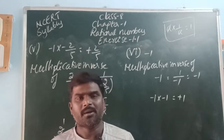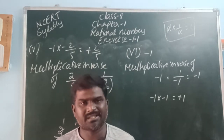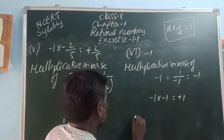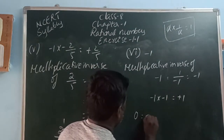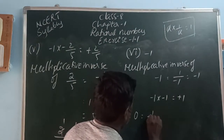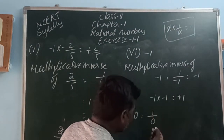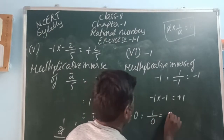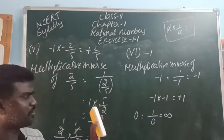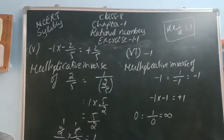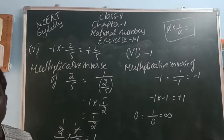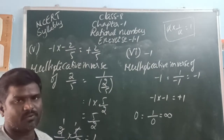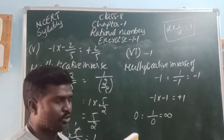Which number does not have a multiplicative inverse? That is 0. Because the multiplicative inverse of 0 would be 1 by 0, and 1 by 0 is undefined. So the element which does not have a reciprocal or multiplicative inverse is 0.